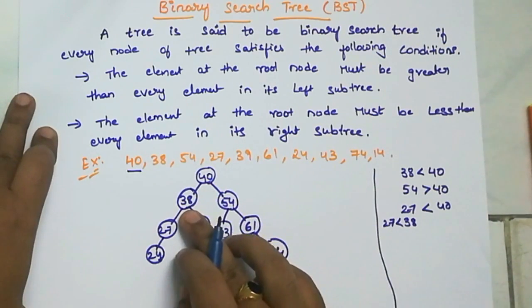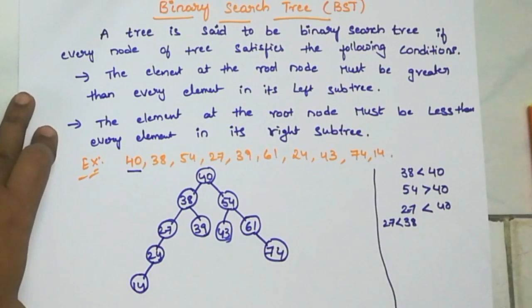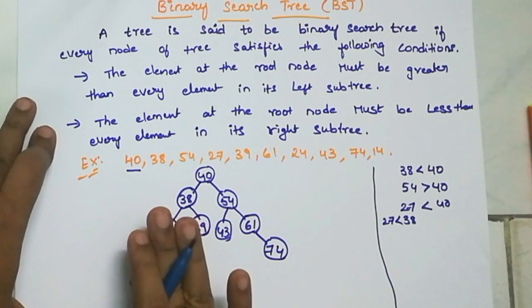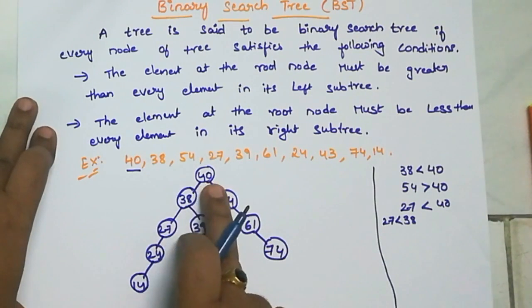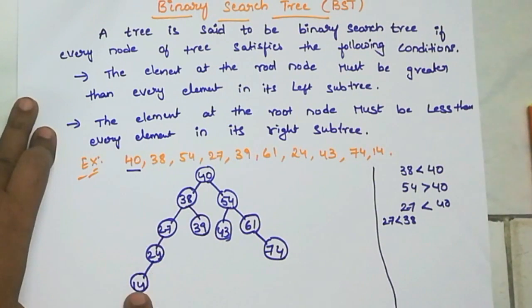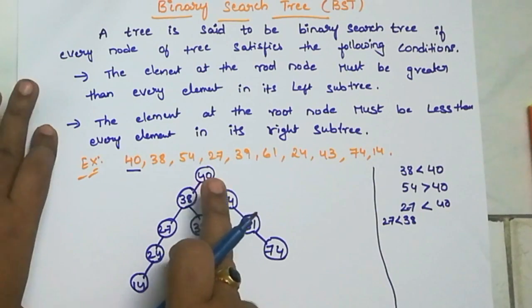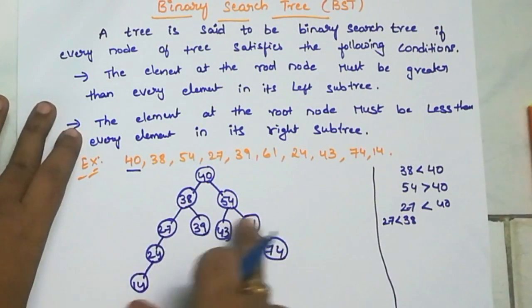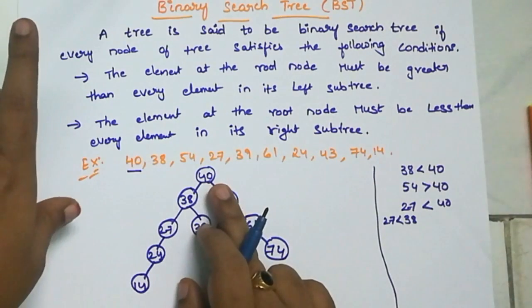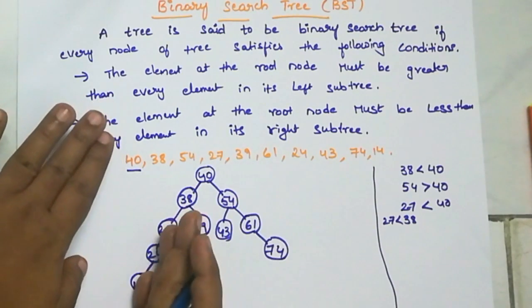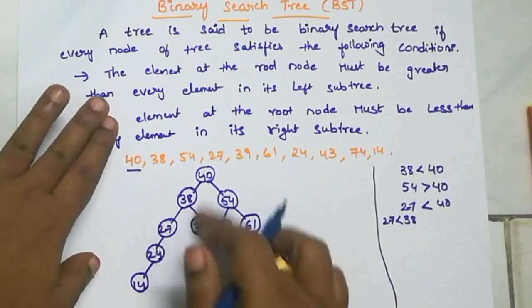Next, 14 — 14 is smaller than 40, smaller than 38, smaller than 27, smaller than 24, so 14 is placed as one child of 24. Let us verify once: all left side elements of 40 — that is 38, 39, 27, 24, 14 — are all smaller than 40. All right side elements — 43, 54, 61, 74 — are all bigger than 40. Every element was compared and allotted correctly, first with 40, then moving left or right and comparing with the next node.